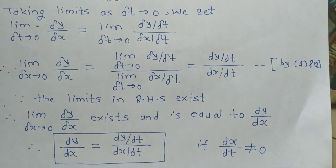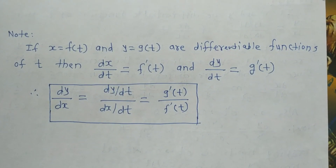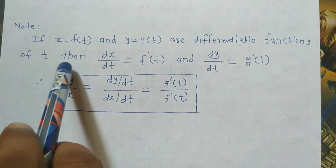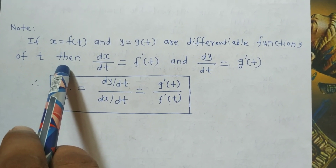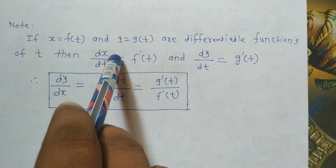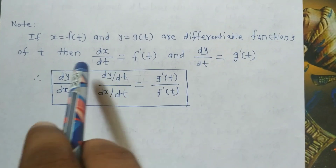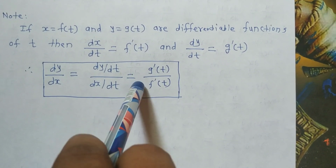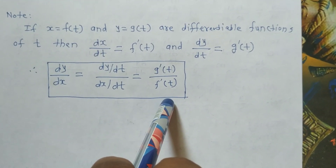This is the required proof. The theorem is proved. Now let us see a note, which is useful for examples. If x equal to f of t and y equal to g of t are differentiable functions of t, then the derivative of x with respect to t is f dash of t, and the derivative of y with respect to t is g dash of t. Therefore, by the theorem, dy upon dx equal to dy upon dt upon dx upon dt equals g dash of t upon f dash of t. This is our note.